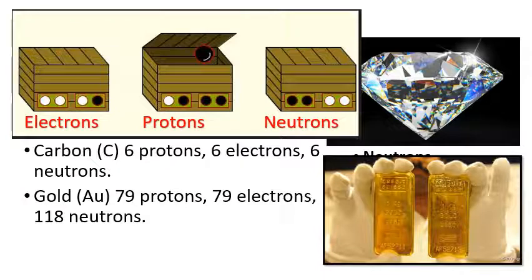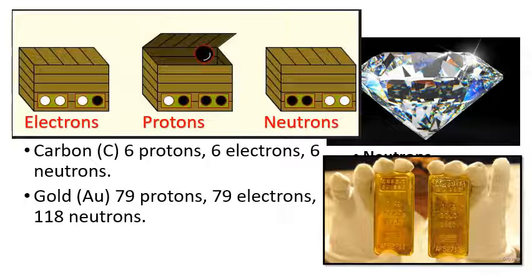If you had boxes containing electrons, protons, and neutrons, you could build any element by taking out the right number of each. Put together enough carbon atoms and you can make a diamond. React atoms together to form chemical bonds between different types — carbon, gold, and so on — and you create molecules. Create really big molecules and you have macromolecules, and that's what we use to build human life.